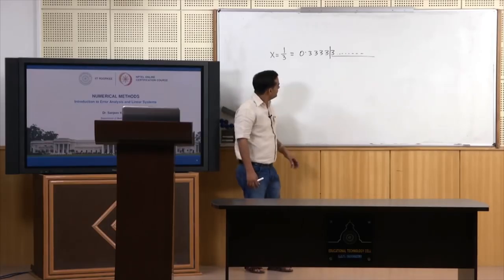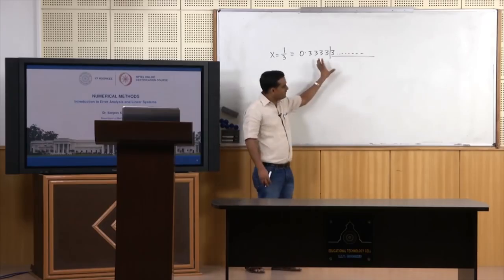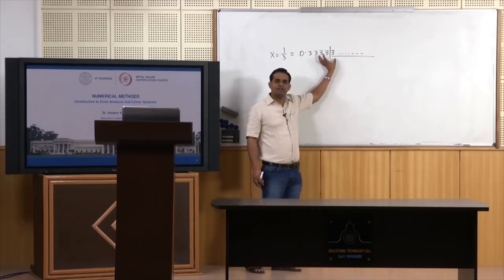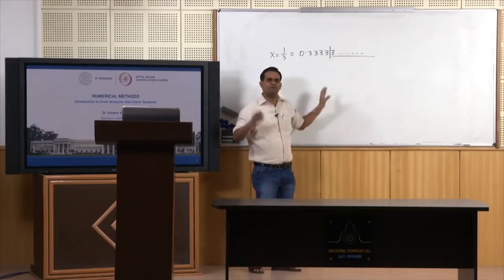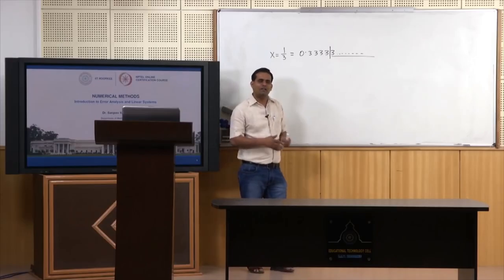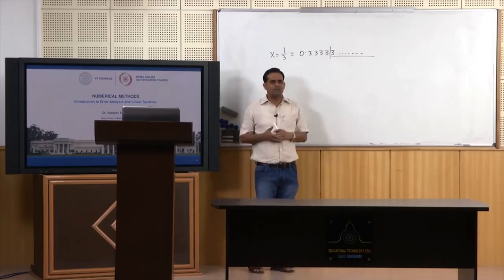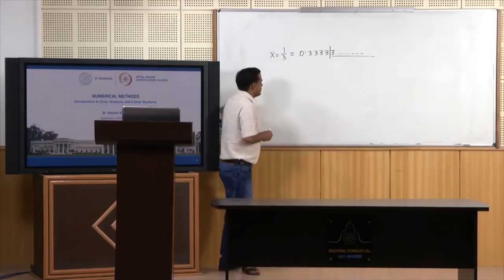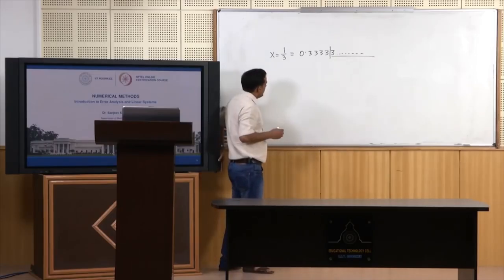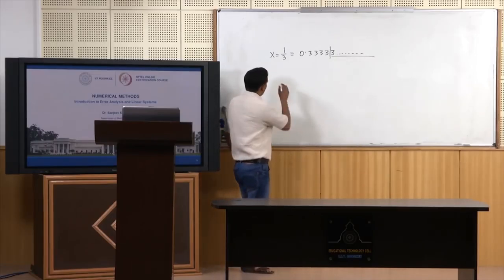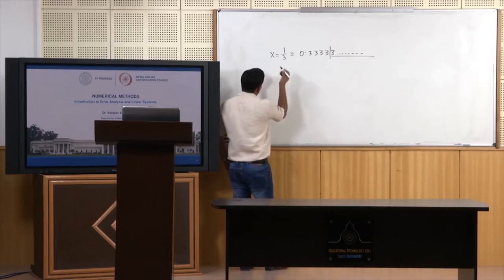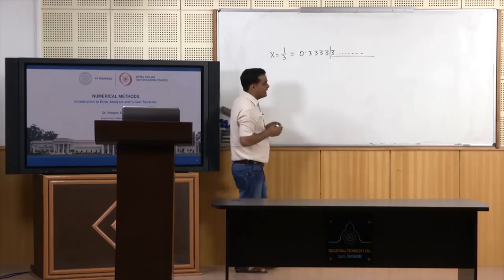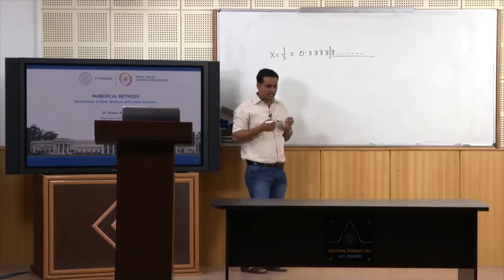If you see here, this is a very small error up to the fifth place of decimal. However, in further computations this small error propagates and becomes a large error. Now how do we deal with it? Before that, let us learn how the computer stores numbers.